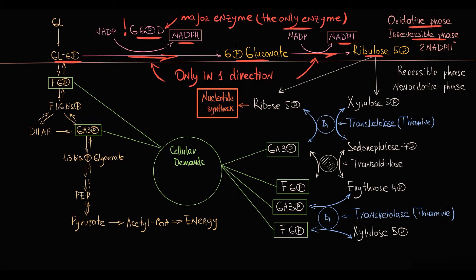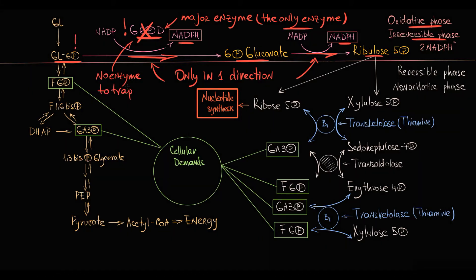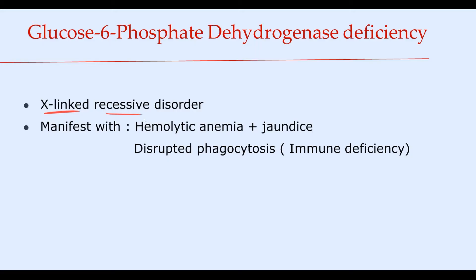With glucose-6-phosphate dehydrogenase deficiency, there is no enzyme to take glucose into the hexose monophosphate shunt, so the organism cannot produce a sufficient amount of NADPH molecules. This results in two major features of glucose-6-phosphate dehydrogenase deficiency.